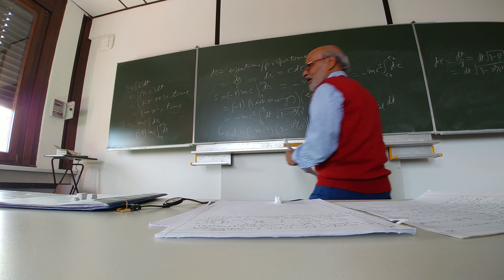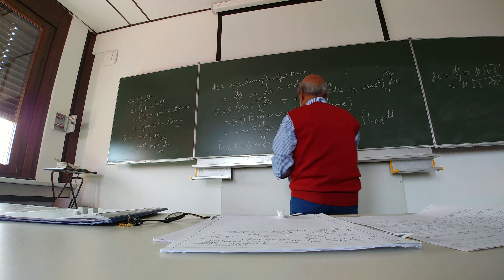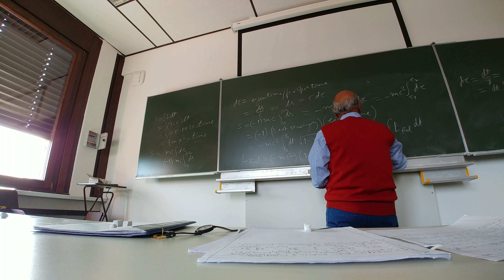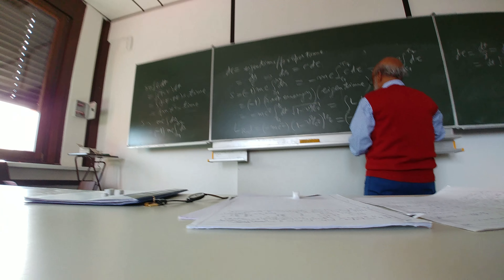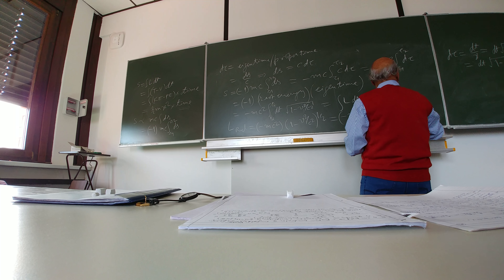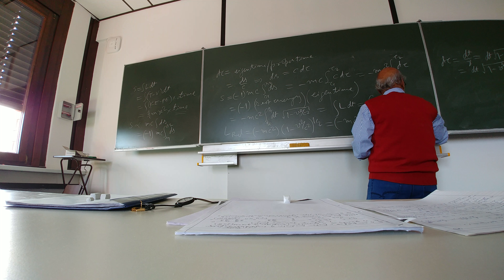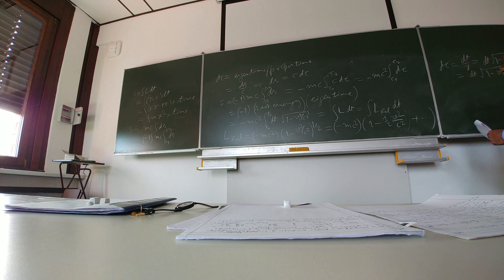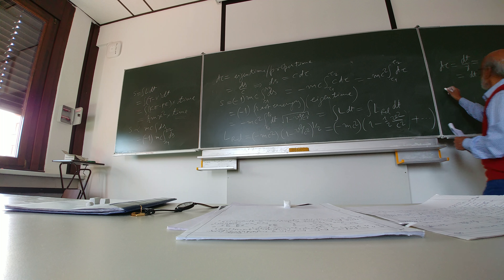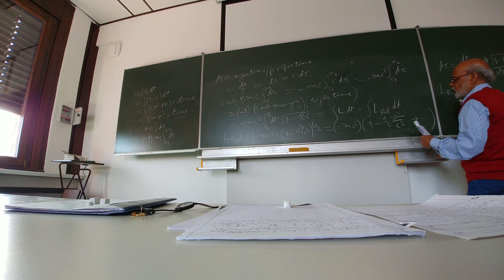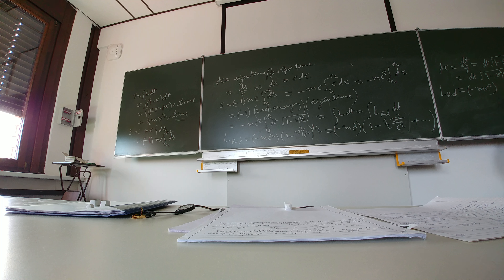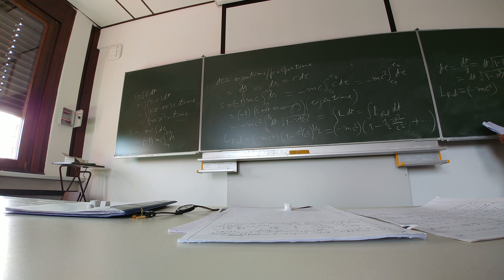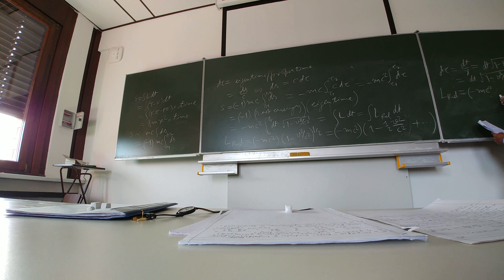Now I can make a binomial expansion. So this is minus mc squared times 1 minus one-half v squared by c squared plus higher order terms, which I can neglect. And therefore this would be minus mc squared plus...